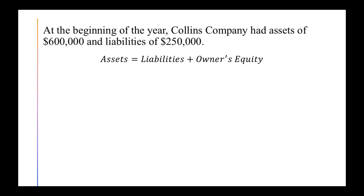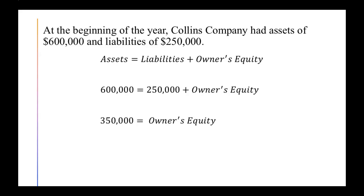Because we were only told our assets and our liabilities. So we have our basic accounting equation: assets equals liabilities plus owner's equity. We're going to start plugging in the amounts that we know. We know our assets are $600,000 and our liabilities are $250,000. Then we can just solve for the unknown, just like you would in algebra. So we subtract $250,000 from each side and find that our owner's equity at the beginning of the year is $350,000.